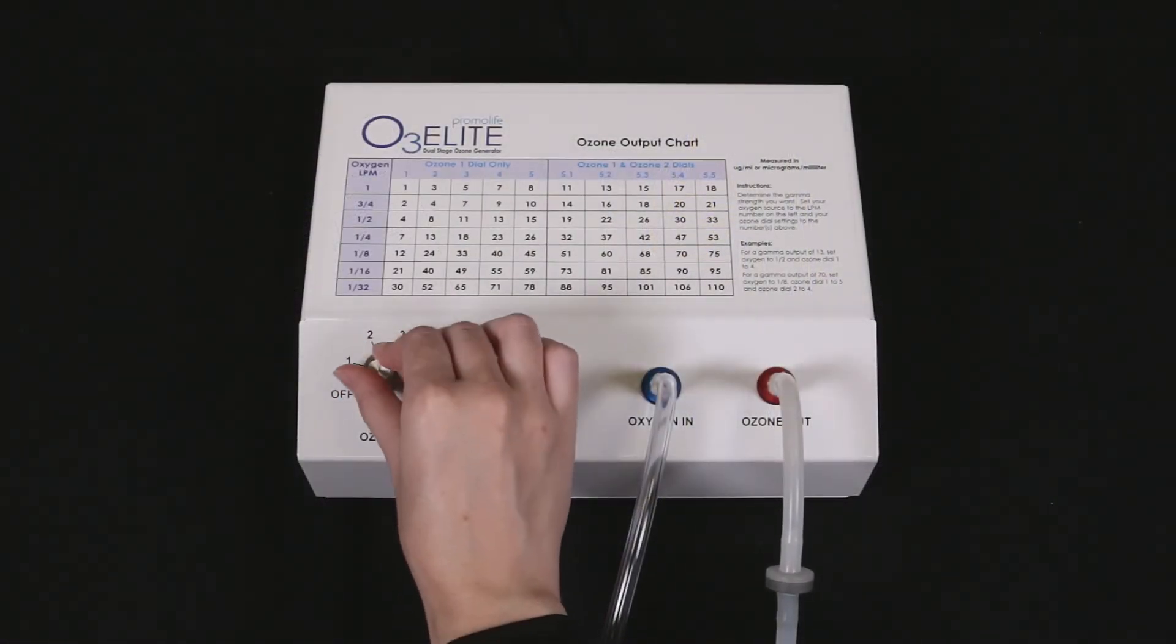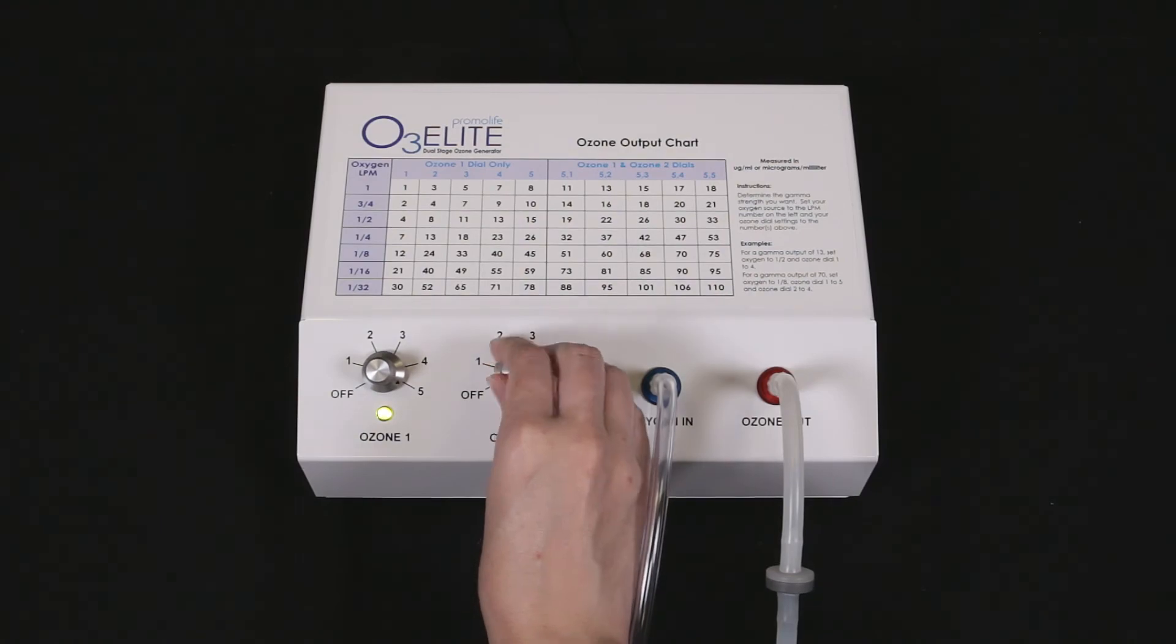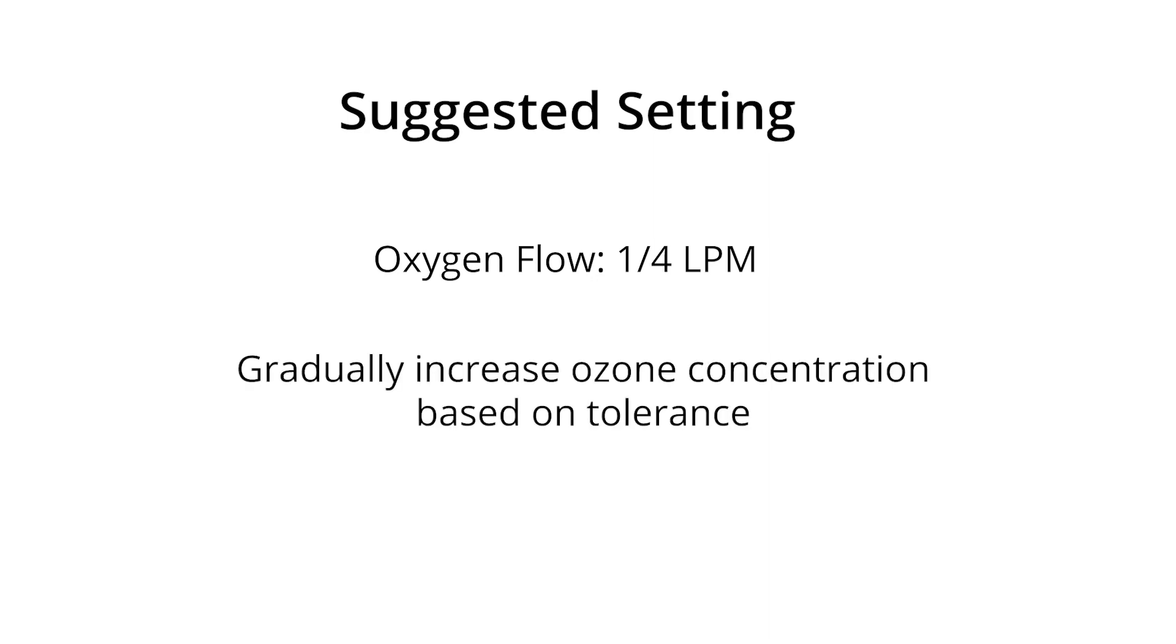Lastly, set your generator to the desired settings and begin your oil breathing treatment. The suggested settings for the setup is to have an oxygen flow rate of ¼ liters per minute, and then gradually increase your ozone concentration based upon tolerance.